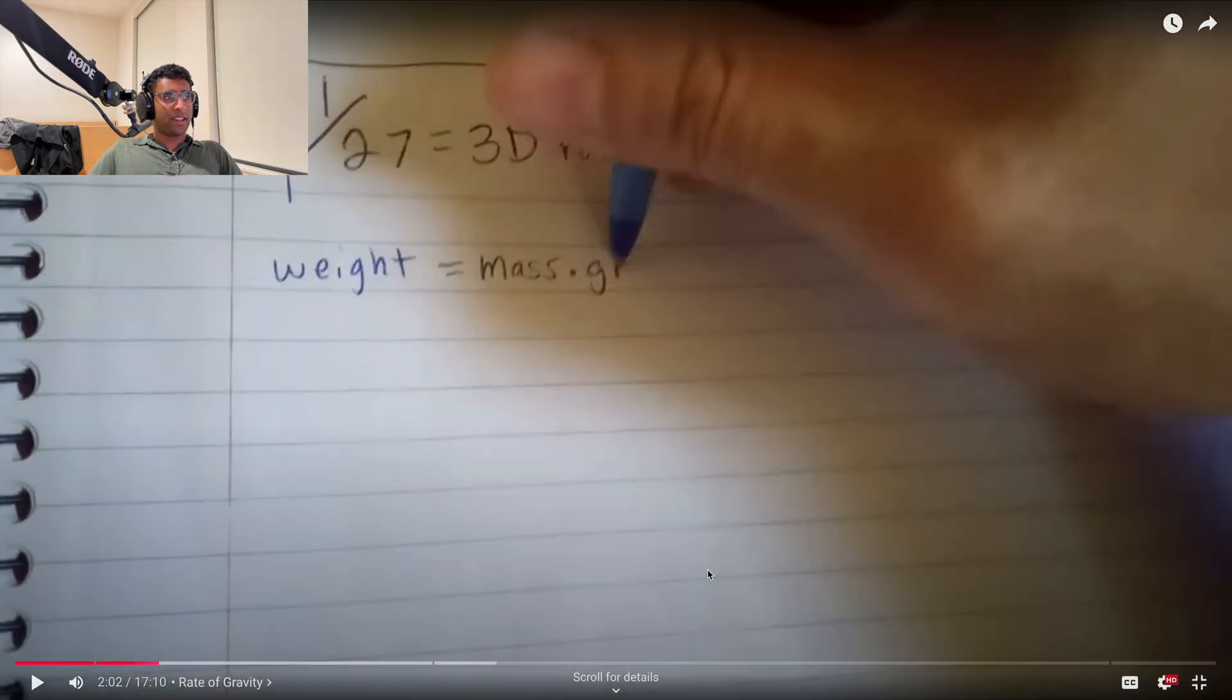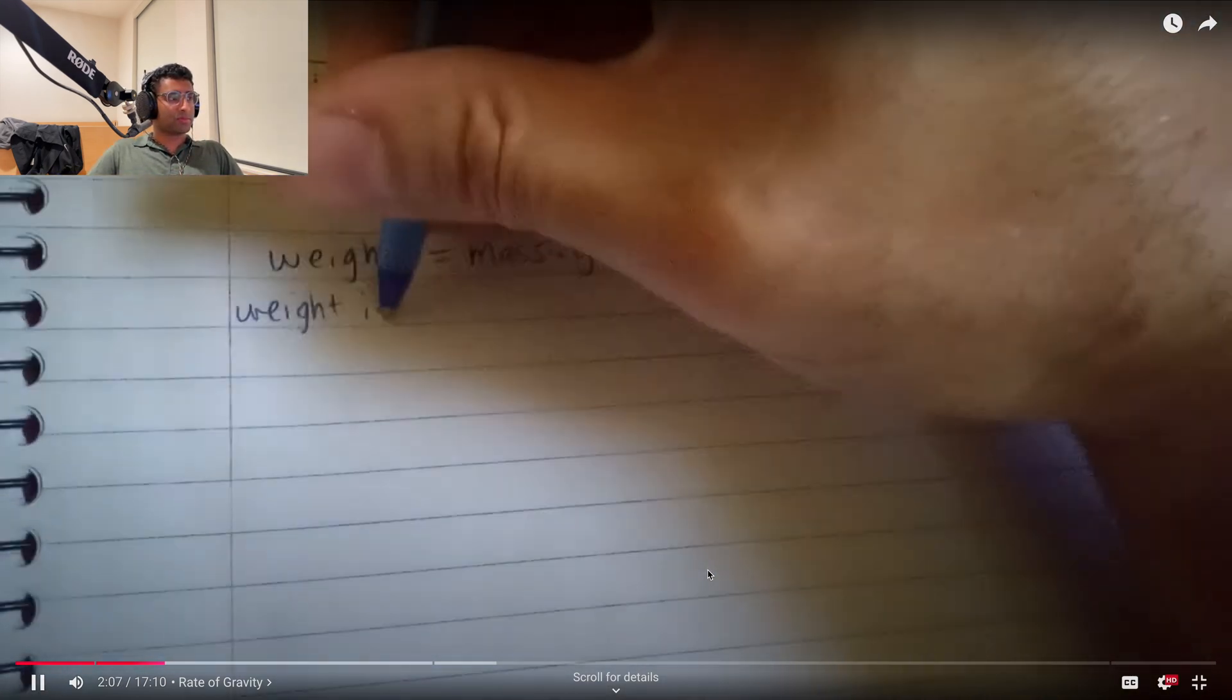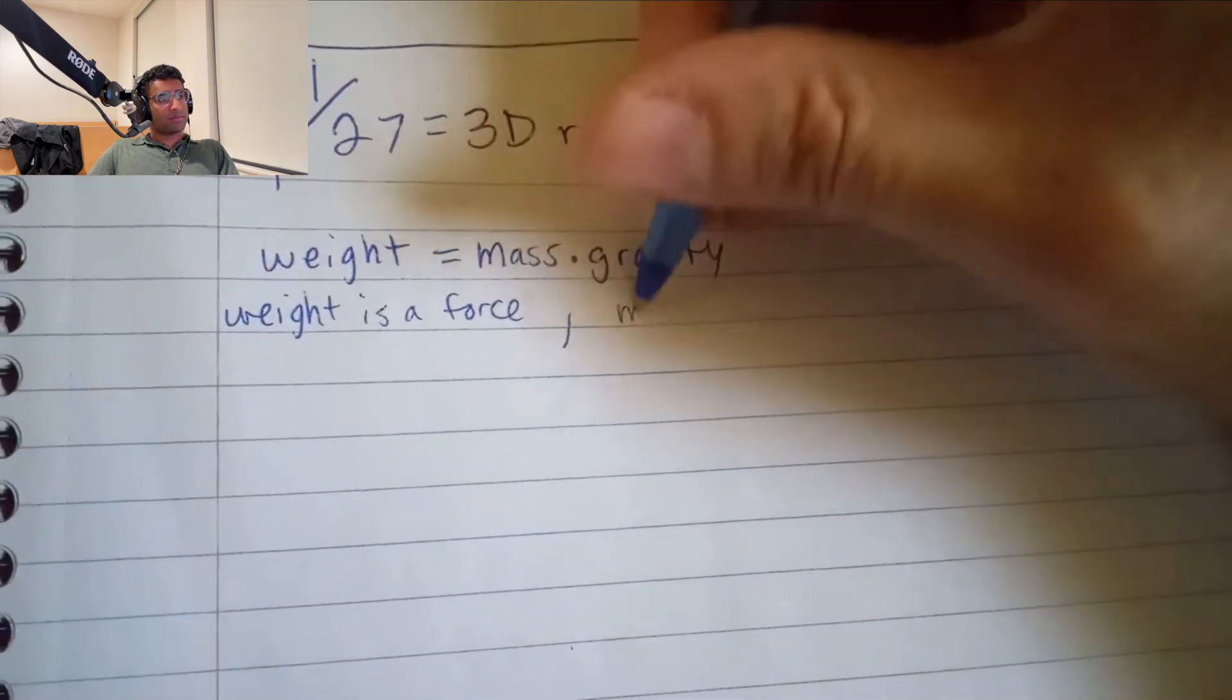First of all, there's no such thing as the 2D rate of gravity. Gravity only applies to three-dimensional objects is what applies in the real world, but let's keep going. Weight, you know, is a force with gravity in mind.